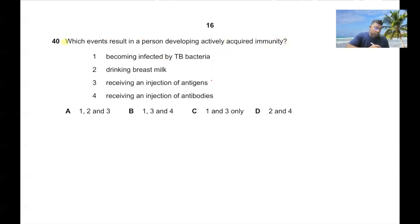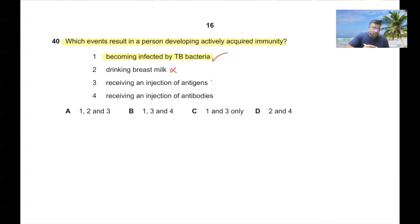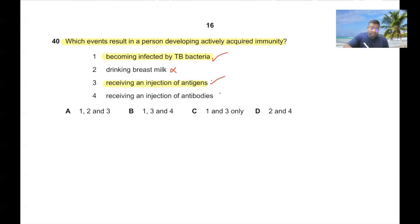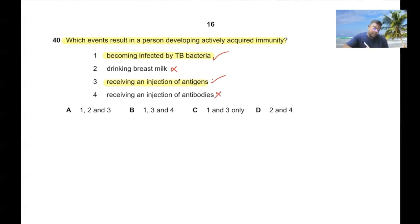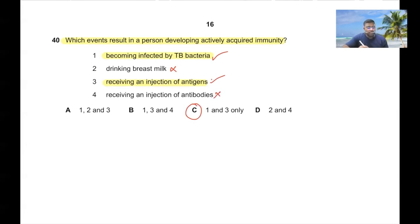Question 40: Which events result in a person developing actively acquired immunity? Becoming infected by TB — yes, active immunity. Drinking breast milk — no, that is passive immunity. Receiving an injection of antigen — yes, active immunity. Receiving an injection of antibodies — no. So events 1 and 3 are correct, option C. 40C.